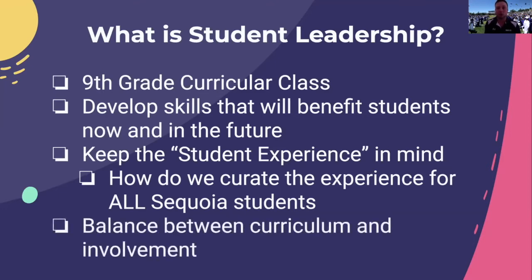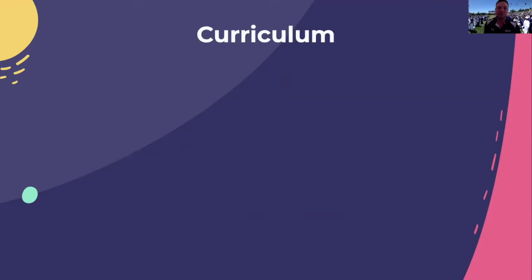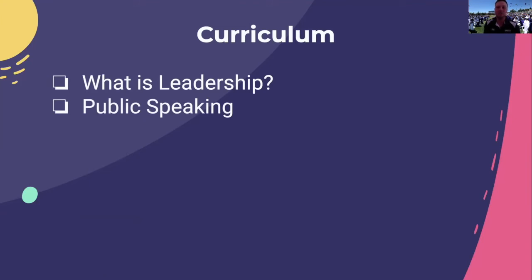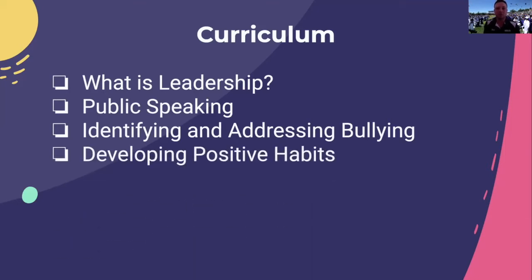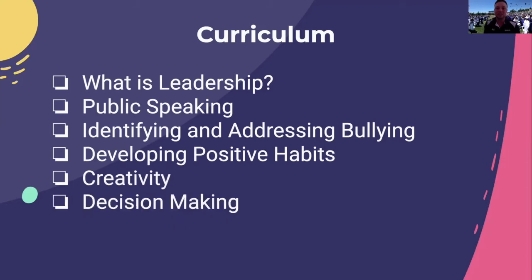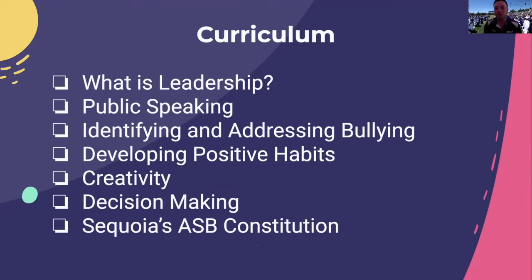It's a balance in that class between the curriculum that we teach and getting involved in school events. The curriculum starts with a big macro idea of what leadership is — we take students' preconceived ideas and hone them into a working definition. We then get into tangible skills like public speaking, maintaining campus culture, identifying and addressing bullying, developing positive habits, creativity, and decision making. We also cover Sequoia's ASB constitution and the rules that govern our student groups, and put it all together with event planning.